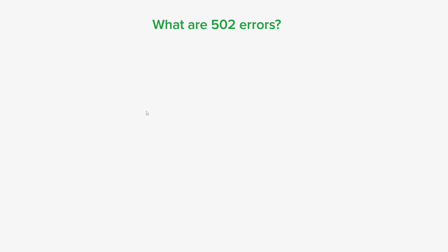Starting off, what are 502 errors? A 502 error is an HTTP status code that indicates a bad gateway. It means that a server acting as a gateway or proxy received an invalid response from an upstream server while attempting to fulfill a client's request. In simpler terms, it's like a bad connection error. It occurs when you're trying to visit a website but the server handling the requests is having trouble communicating with another server it depends on. It's similar to calling someone on the phone and getting a message saying sorry, I couldn't connect you to the person you're trying to reach.